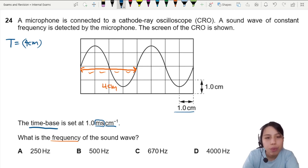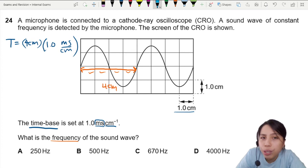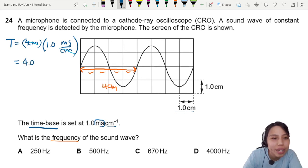So I read 4 cm on the screen. How much is that in milliseconds? 1.0 milliseconds over cm. You know why I do this? Because then cm, cm cancels out.